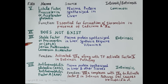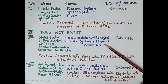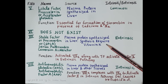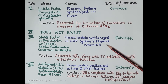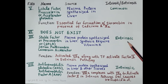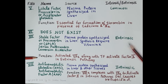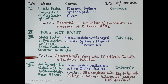Clotting factor 7 is also called the stable factor, proconvertin, or serum prothrombin conversion accelerator. It is a plasma protein synthesized in the liver, and its synthesis requires the presence of vitamin K. It is essential for the extrinsic pathway. Activated clotting factor 7 (7a), along with tissue factor, activates clotting factor 10 in the extrinsic pathway.